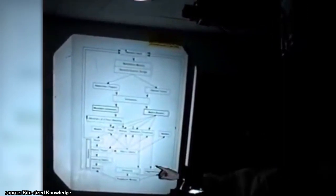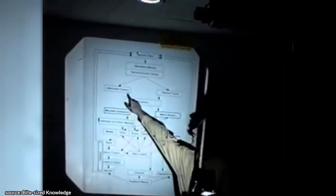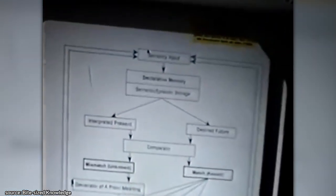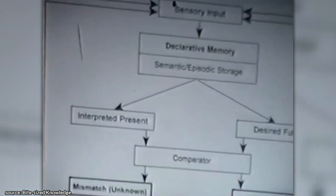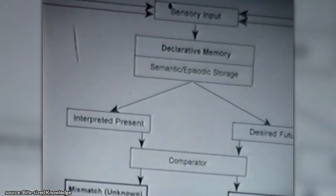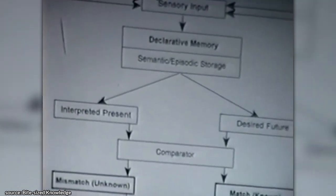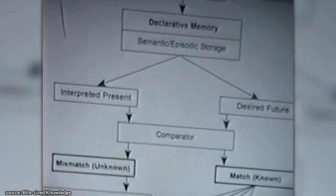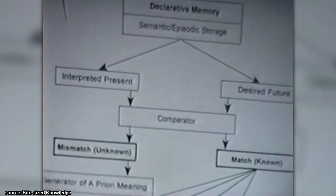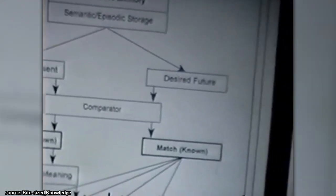So you use your declarative memory — that's one form of memory storage — to construct your version of the present. That's the significance of things as they're unfolding at the present time. You can only really make judgments about the significance of things by contrasting them with what you would like to happen. So that's your image of the desired future.